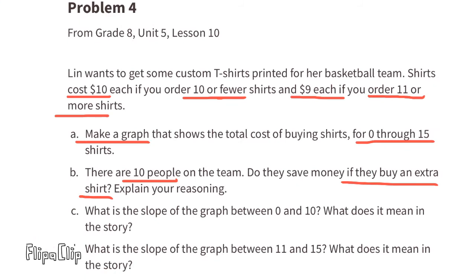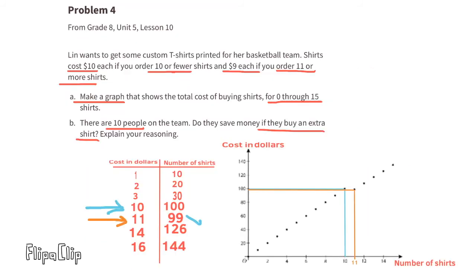B. There are 10 people on the team. Do they save money if they buy an extra shirt? Explain your reasoning. If 10 people each paid $10 for one shirt, that would be 10 shirts for $100. If they bought an 11th shirt, then they could buy 11 shirts for $9 each. And 9 times 11 is $99. So if they paid for 11 shirts, they would actually save $1.